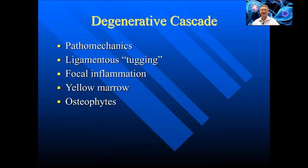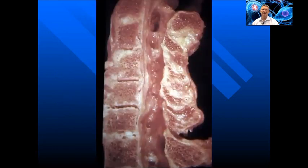A degenerative cascade occurs where aberrant pathomechanics — changes in the position or motion of our vertebra and altered curves — cause ligamentous tugging. This leads to focal inflammation, the deposition of yellow marrow or replacement of the normal hemopoietic red marrow, and eventually the development of osteophytes. In this cadaveric specimen, we can see how this degenerative cascade may manifest.